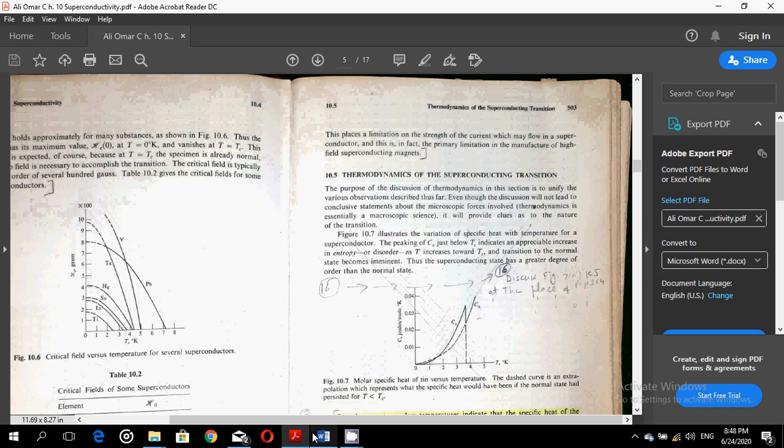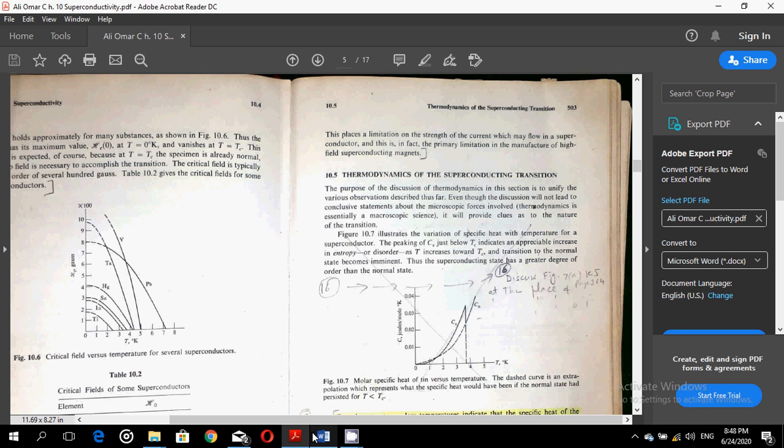Okay. This places a limitation on the strength of the current which may flow in a superconductor, and this is in fact the primary limitation in the manufacture of high-field superconducting magnets.